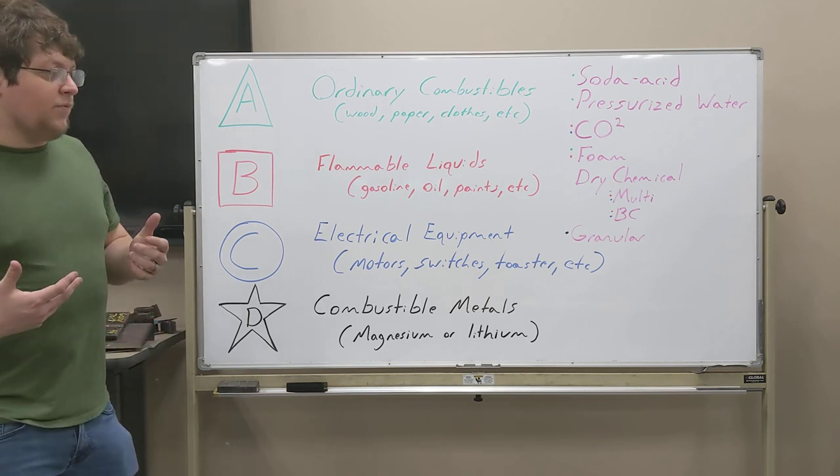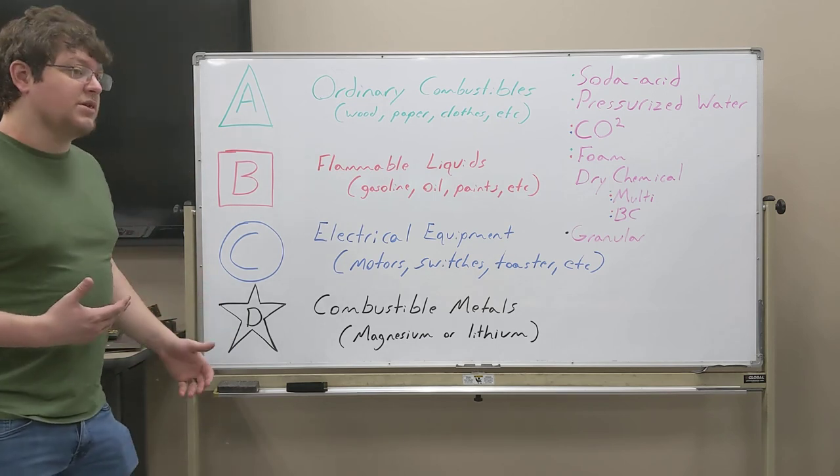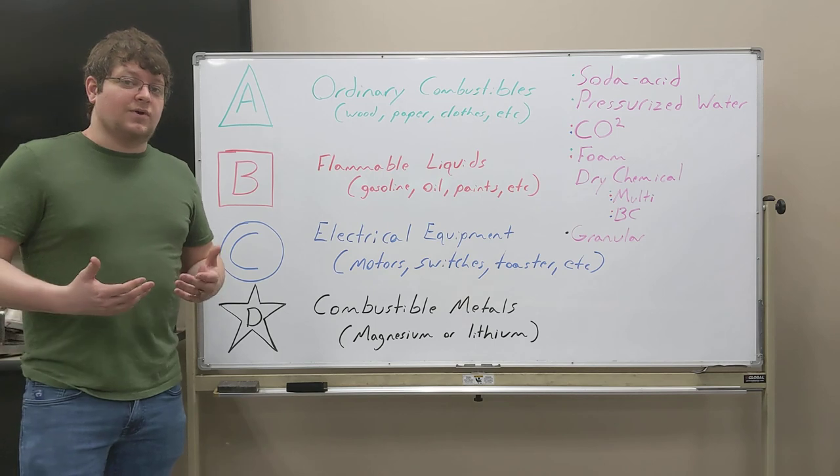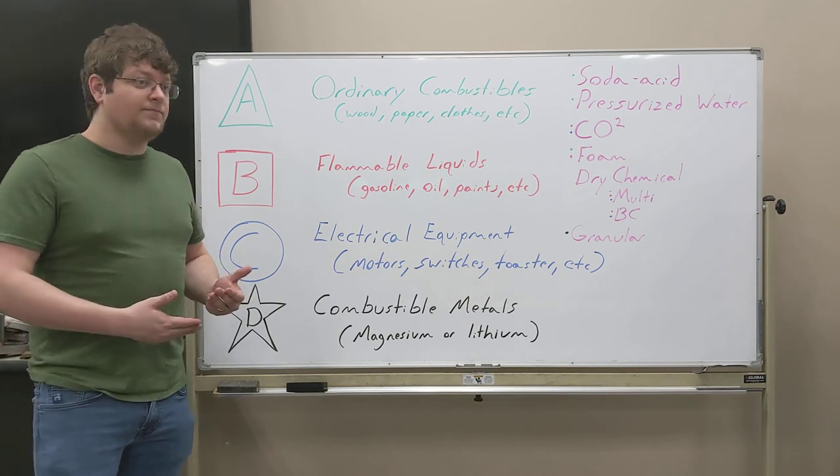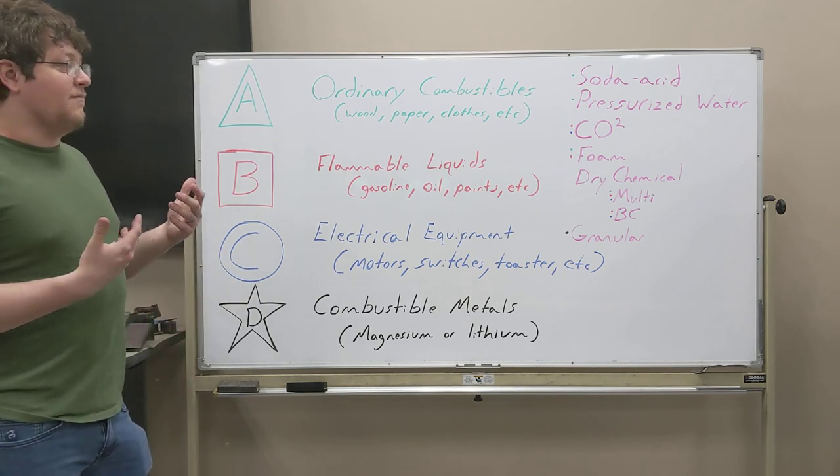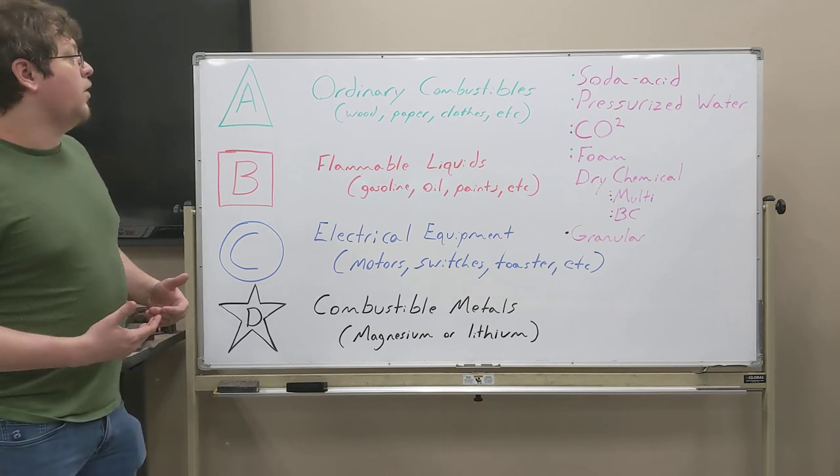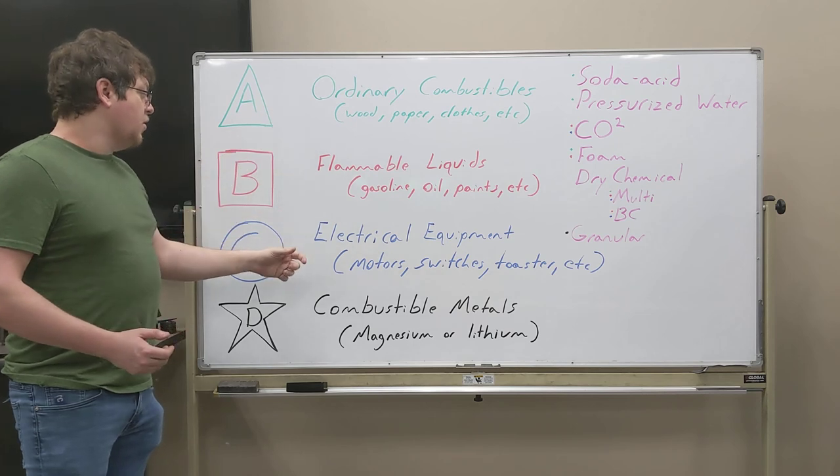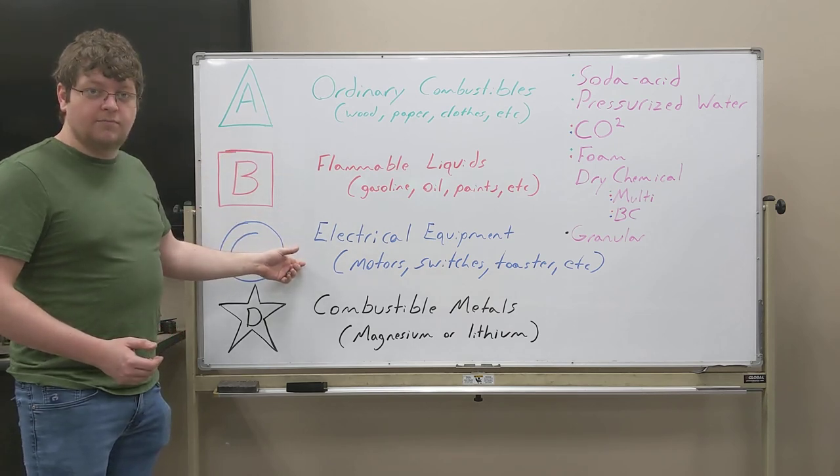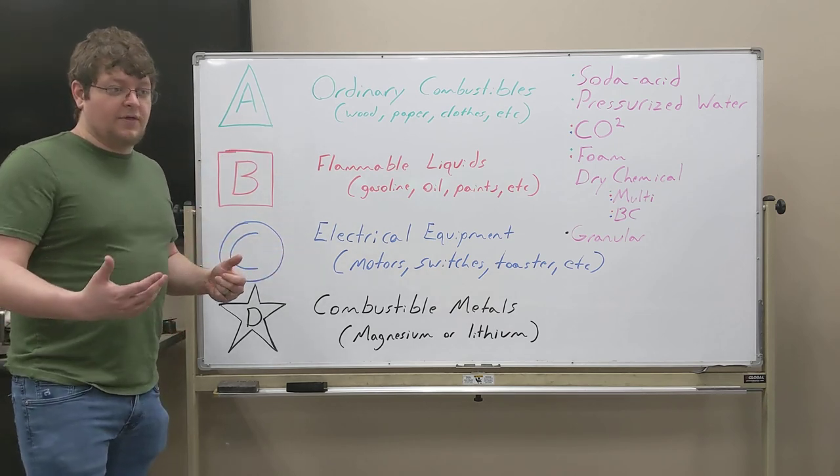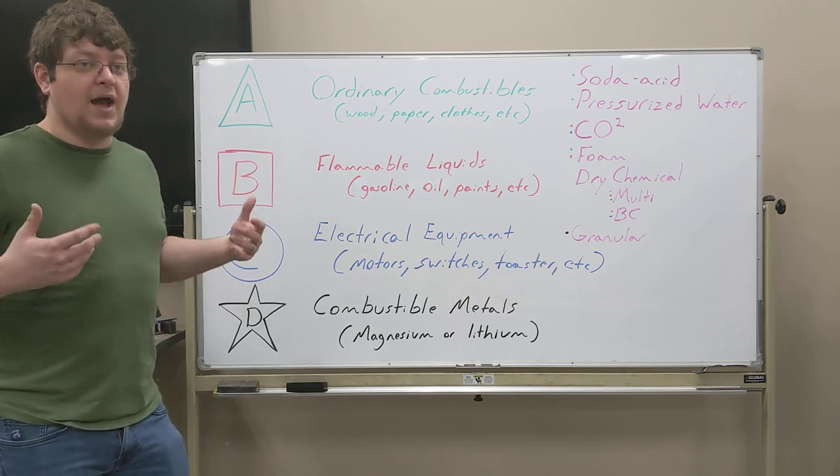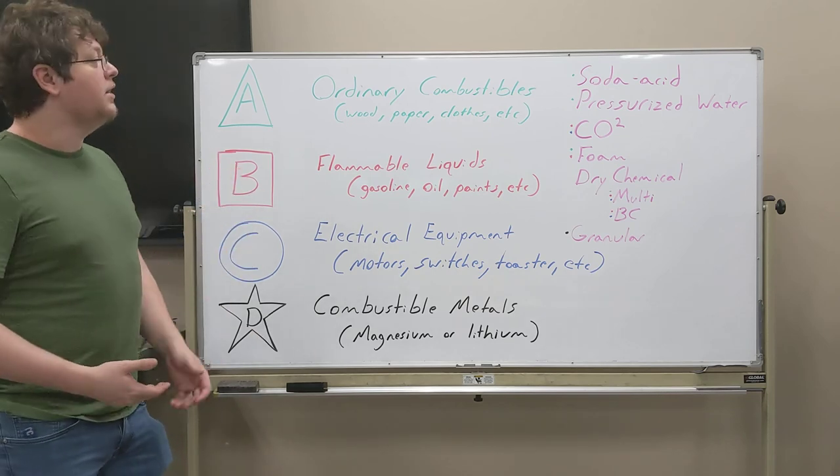Now the reason why we have four different extinguishers is not everything reacts the same way. That's why we have multiple types that can do multiple things. You wouldn't want to use category A for an electrical fire. Electrical fire, if you think about it, you have electricity, you have power going into it.